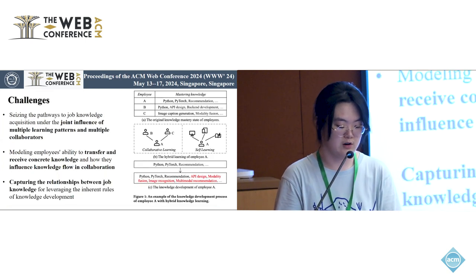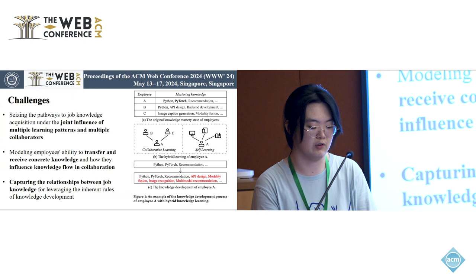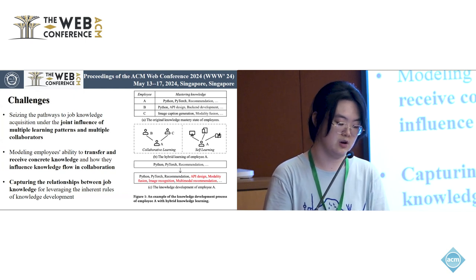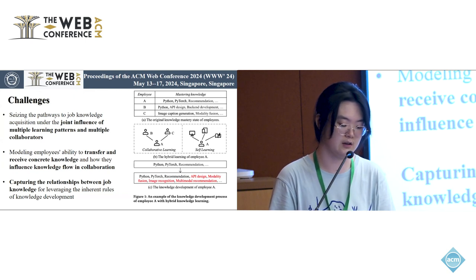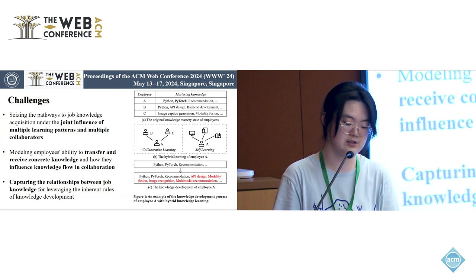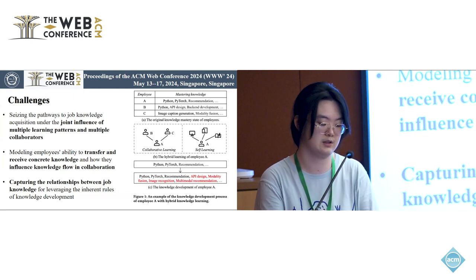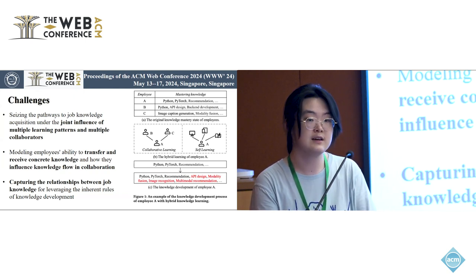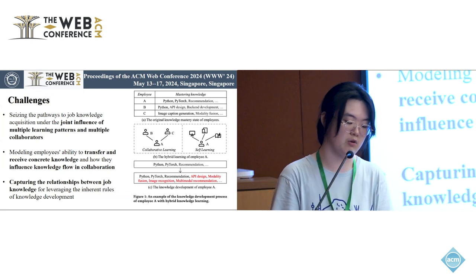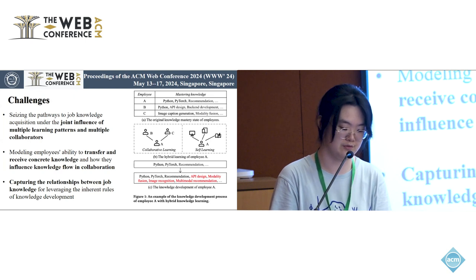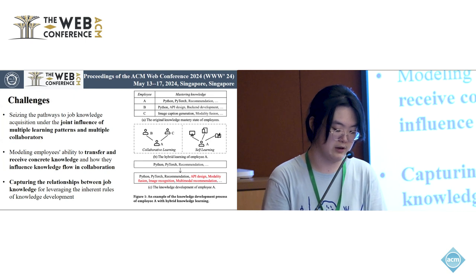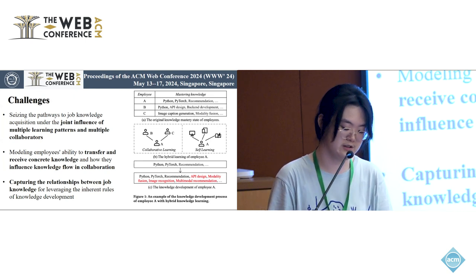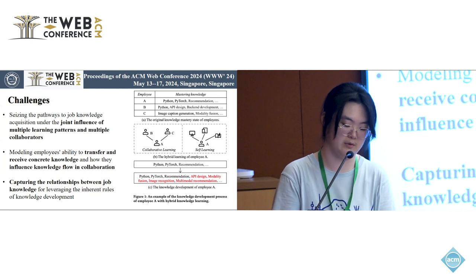However, it is not trivial to model this hybrid learning for knowledge development prediction. First, job knowledge development is jointly influenced by multiple learning patterns and collaborators, making it difficult for the model to see the pathways to job knowledge acquisition. Second, it is difficult to model employees' ability to transfer and receive concrete knowledge and how they influence knowledge flow in collaboration. Third, capturing the relationships between job knowledge for leveraging the inherent rules of knowledge development is challenging.